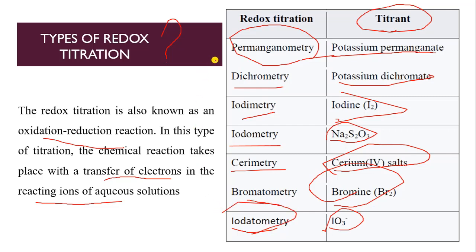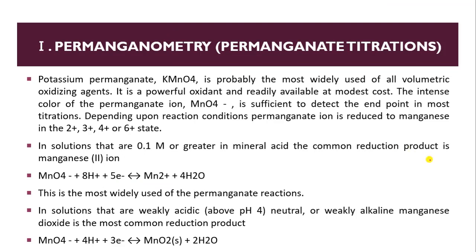So generally for redox titration, these methods are useful. We will see each one in detail. First of all, I will discuss permanganometry. So what is permanganometry? Here we are using potassium permanganate as a titrant. Potassium permanganate (KMnO4) is probably the most widely used of all volumetric oxidizing agents. It is a self-indicator — as discussed in a previous lecture — with KMnO4 as the example.